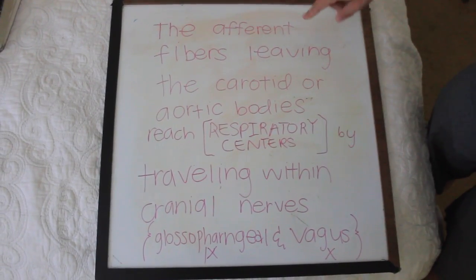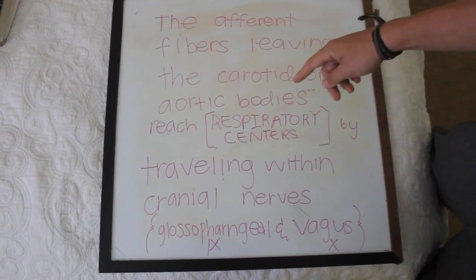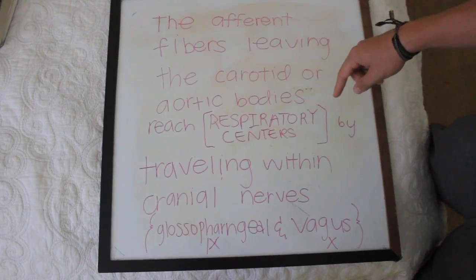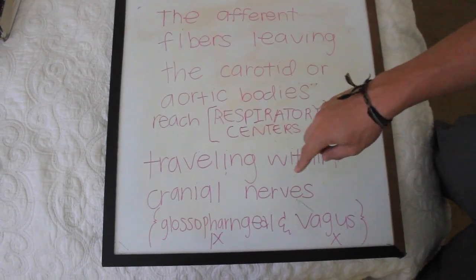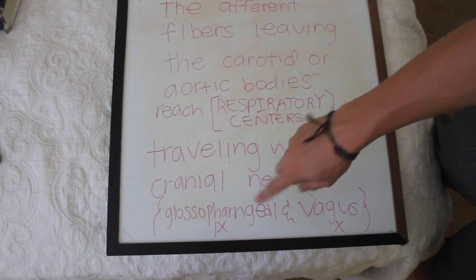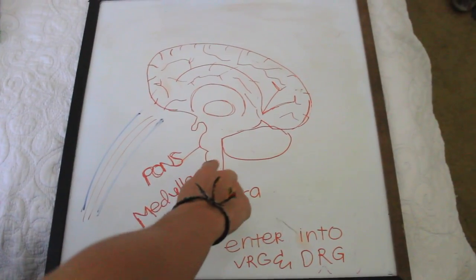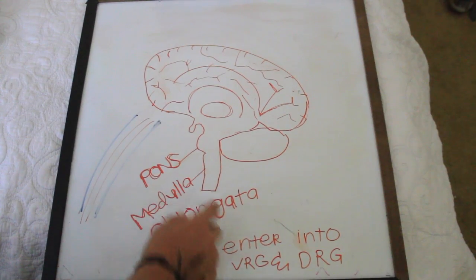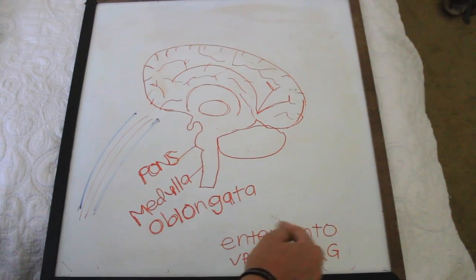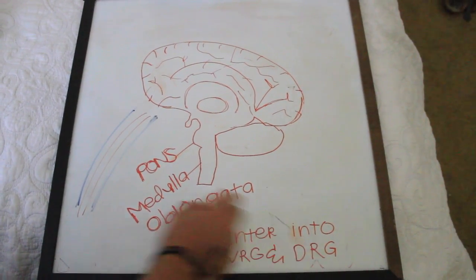The afferent fibers leaving the carotid or aortic bodies reach respiratory centers by traveling within cranial nerves — the glossopharyngeal and the vagus. The glossopharyngeal nerve will travel to the medulla oblongata, where they then enter the VRG and DRG — the ventral respiratory group and dorsal respiratory group.